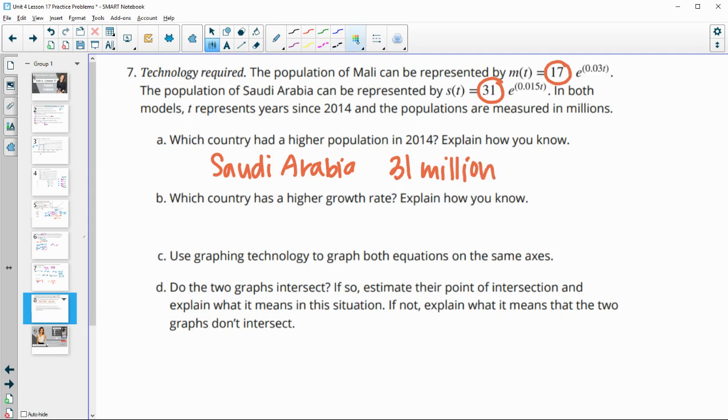Which country had a higher growth rate and explain how you know. So remember, growth rate is this part, e to this decimal. So we want to look at what e to the 0.03 is versus e to the 0.015. And we know that this one's going to be higher because 0.03 is higher than 0.015.